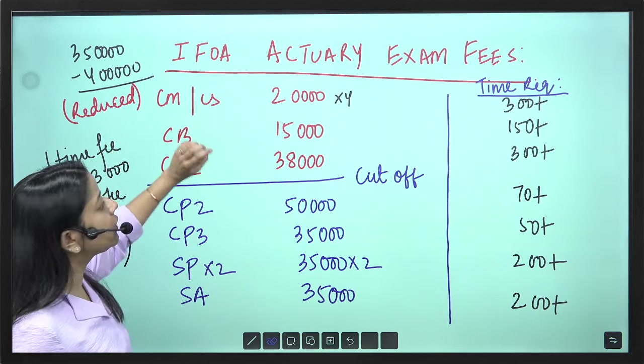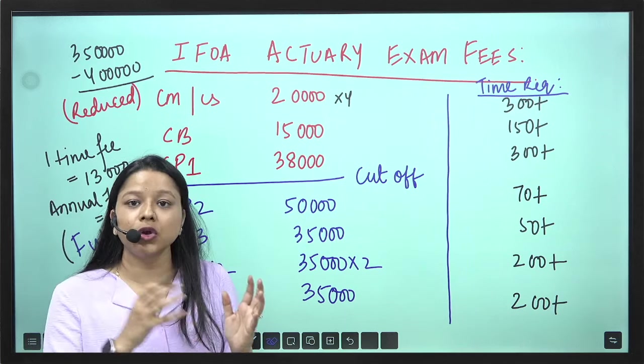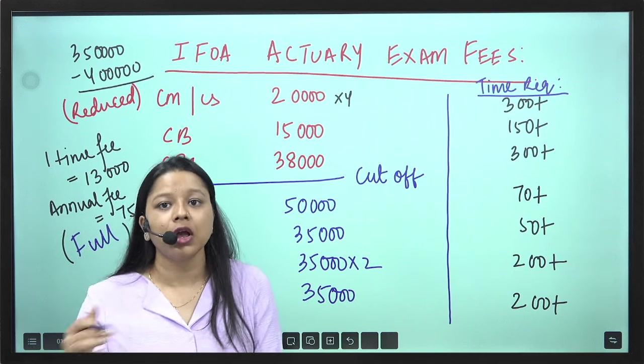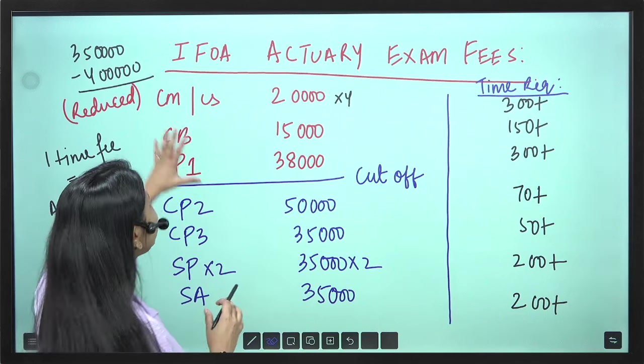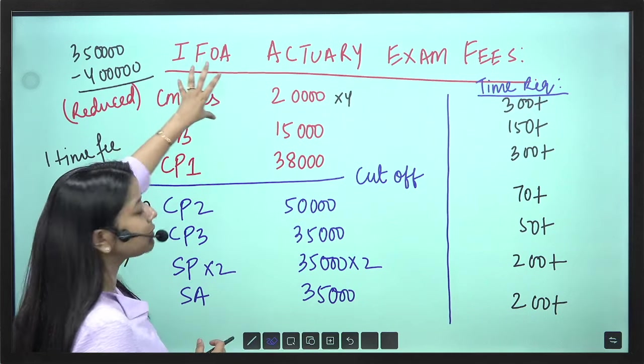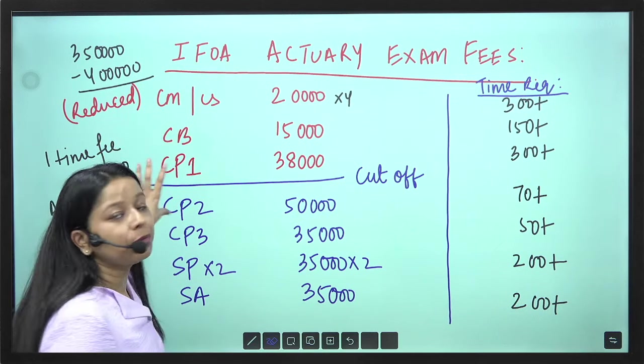One basic thing is that there are 13 papers that you have to appear for. So when you are in your college, in your graduation, be it 3 years or 4 years, we take that you will be able to finish off all the CMCS, CB papers and CP1 exam.